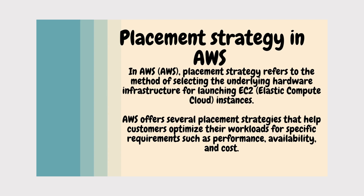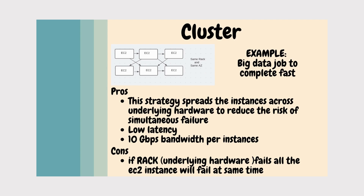There are three different types of methodology and strategy: Cluster, Spread, and Partition. Let's look at Cluster first. Each EC2 instance is deployed under the same hardware, which is equivalent to the same rack. All EC2 instances are deployed under the same availability zone. This gives low latency and 10 Gbps bandwidth per EC2 instance.